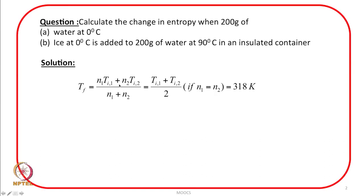If you mix equal amounts — in this question 200 gram added to 200 gram — then N1 equals N2, and this simplifies to Tf = (Ti1 + Ti2) / 2. Since one sample is at 0 degree Celsius and the other at 90 degree Celsius, the final temperature is 45 degree Celsius, which is 318 Kelvin.